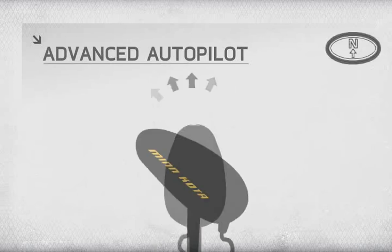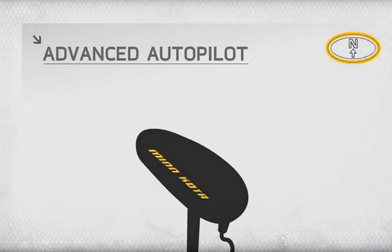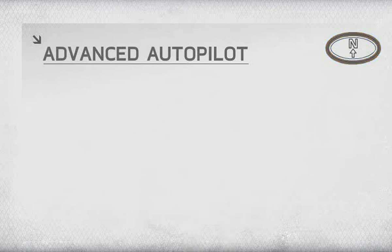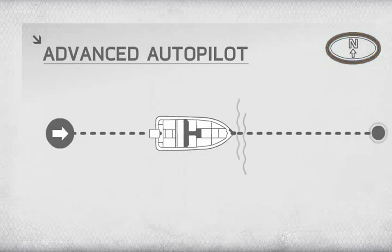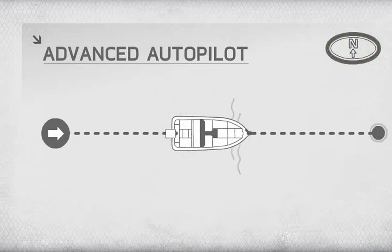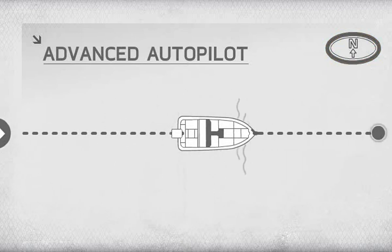Just point the trolling motor in the direction you want to travel and push the Advanced Autopilot button. iPilot will keep you on that heading with GPS accuracy, automatically steering your boat for you so you can concentrate on fishing.